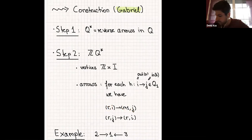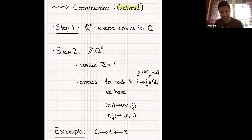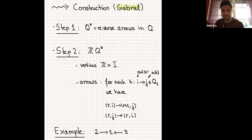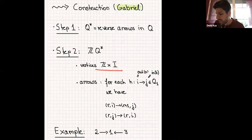Let's look at an example. I'm taking a quiver of type A3 to make this construction work, using the enumeration where 1 is in the middle and 2 and 3 are at the outer parts. One has to choose an admissible numbering of the labels, starting at a sink — every arrow points into that vertex. Let's combine steps one and two and write down what this quiver is.